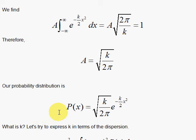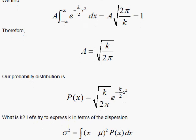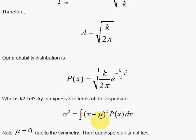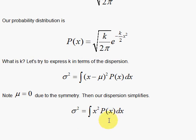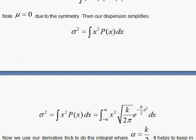What about the standard deviation squared, the variance? Let's try it out. Mu is zero, so that's going to simply be x squared times our probability distribution integrated over all x.